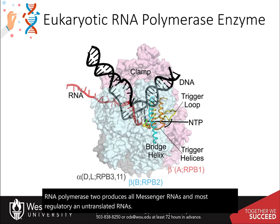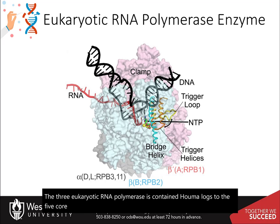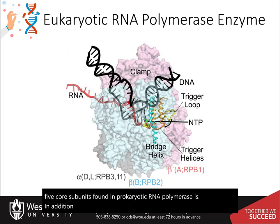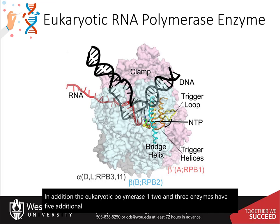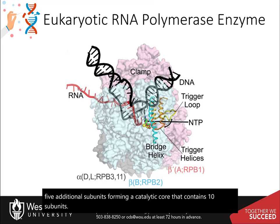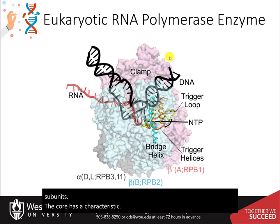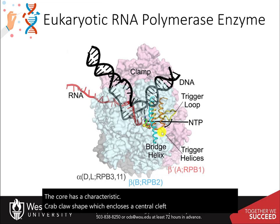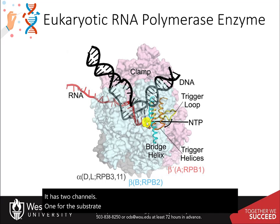The three eukaryotic RNA polymerases contain homologues to the five core subunits found in prokaryotic RNA polymerases. In addition, eukaryotic polymerases one, two, and three have five additional subunits, forming a catalytic core that contains ten subunits. The core has a characteristic crab claw shape which encloses a central cleft that harbors the DNA, with two channels — one for the substrate NTPs and the other for the RNA product.